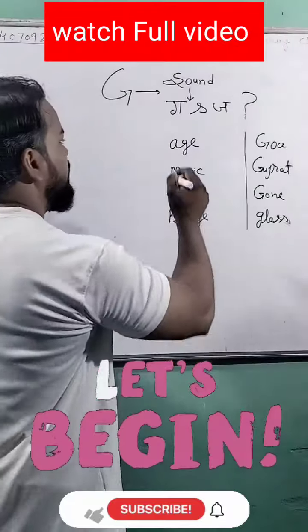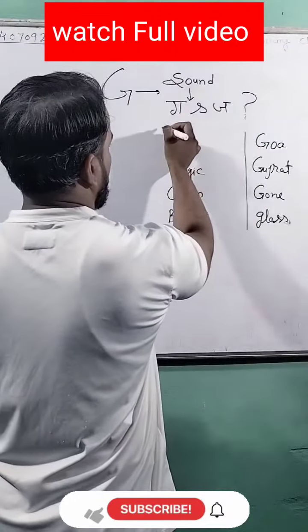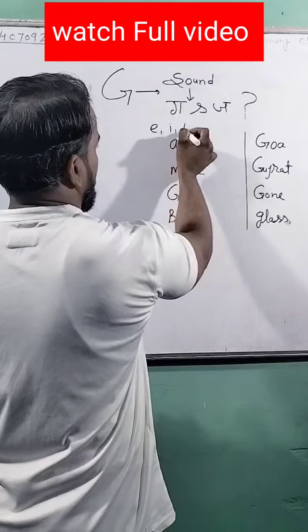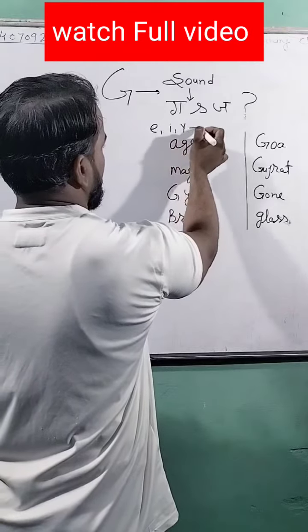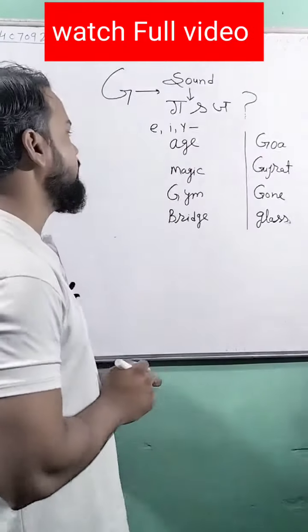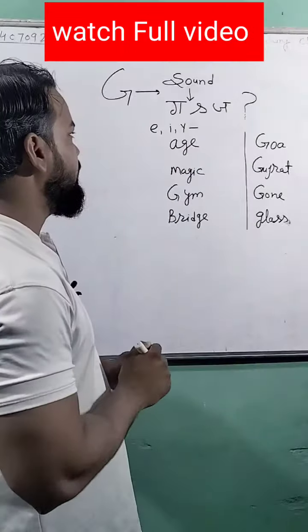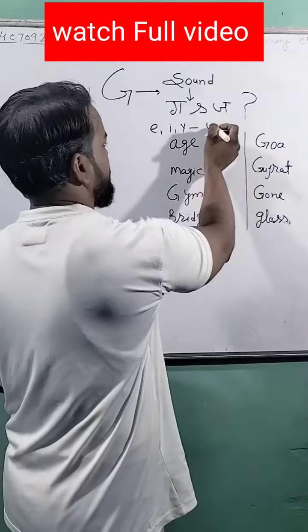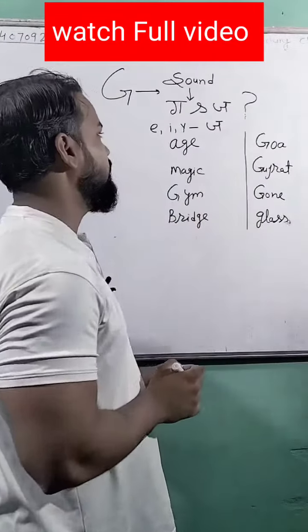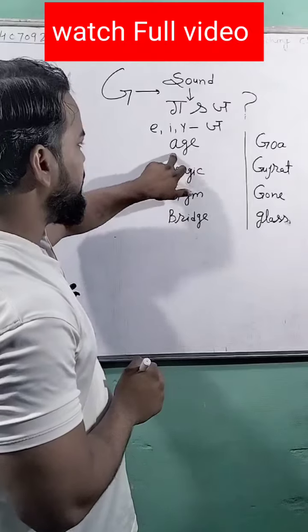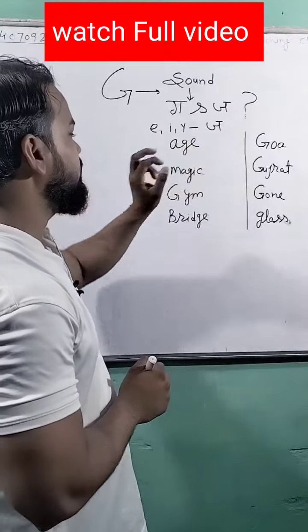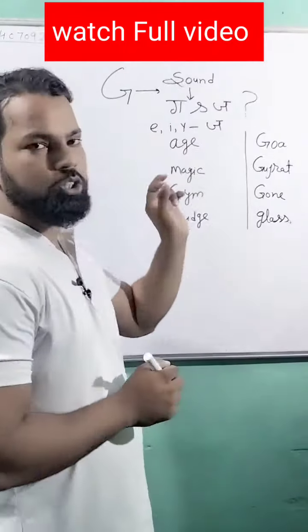When after G, E, I, and Y come, then we call it 'ja'. Like the word 'age' — after G, E comes, then we call it 'ja'.